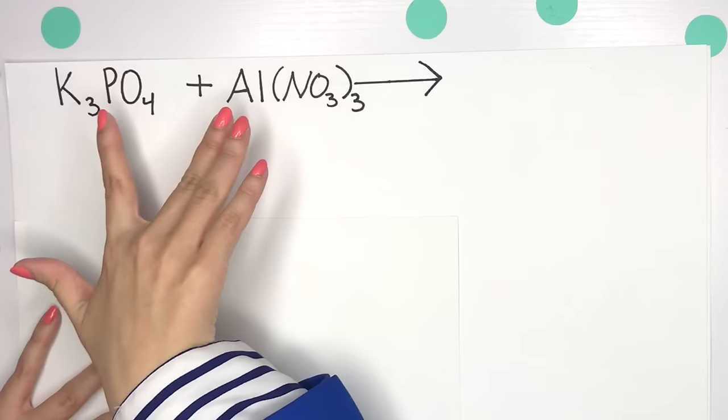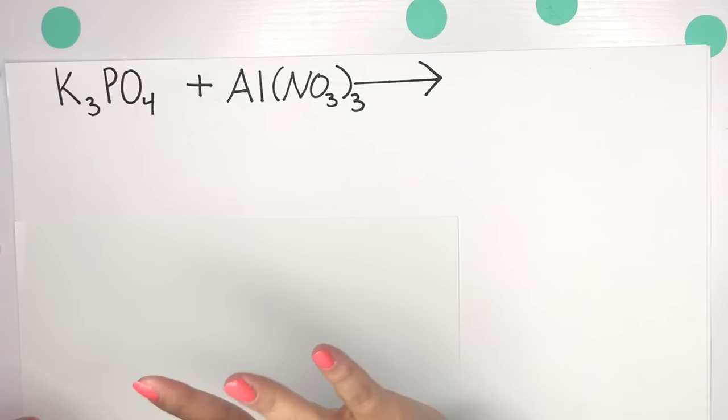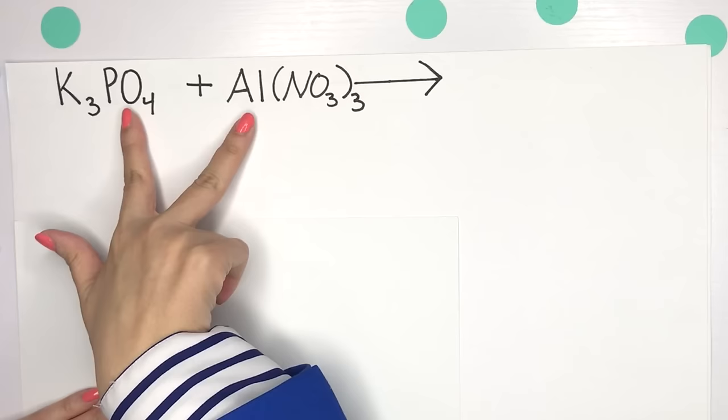So what I like to look at is my little trick for you, kind of like foiling going back to math. The inner goes with the inner and the outer goes with the outer.